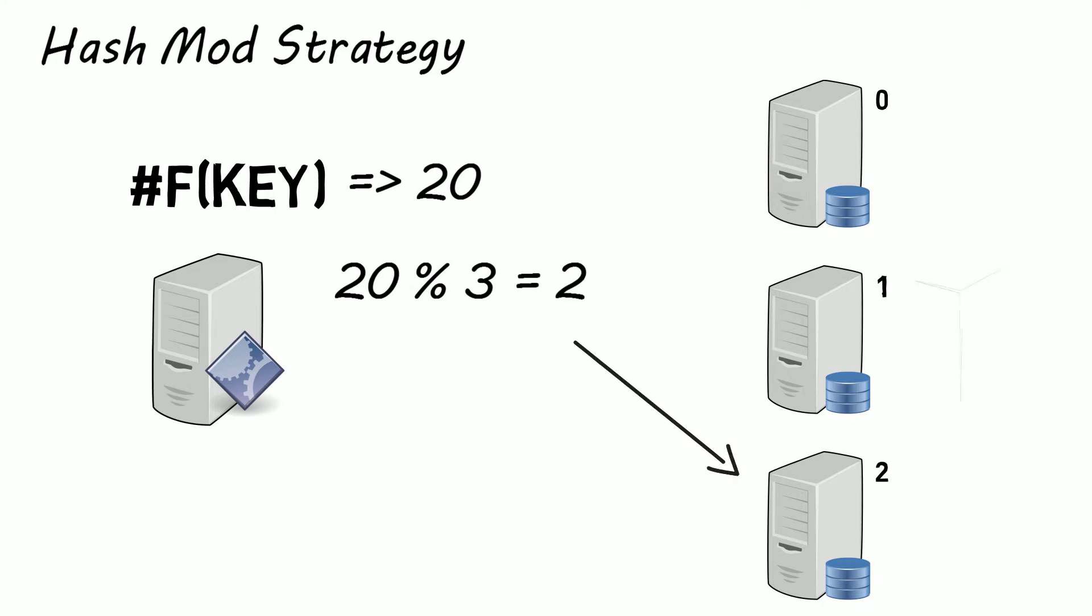The problem with this is if you add or remove a database server, the partition key mapping strategy will break down as the same partition key will now be mapped to another database server. So majority of the data in your distributed database would need to be redistributed, which is very inefficient.